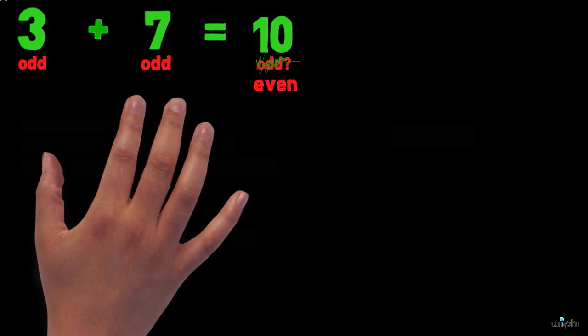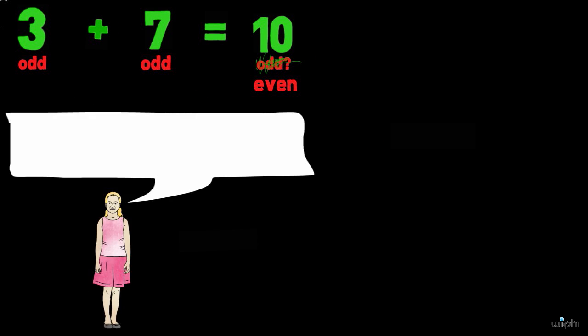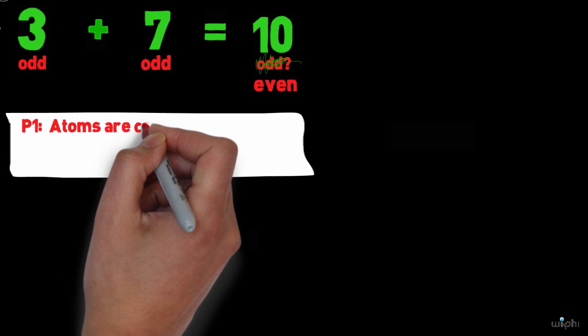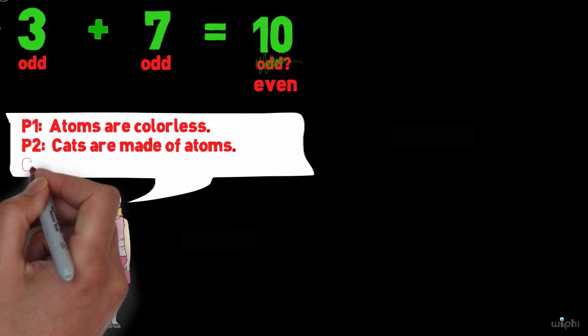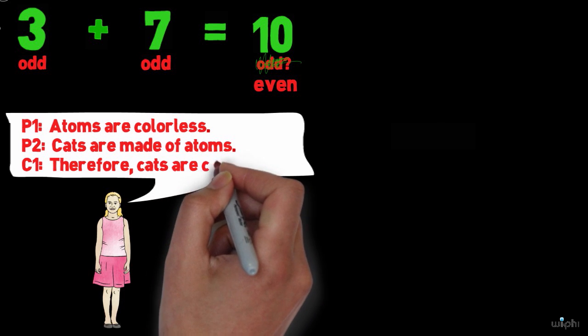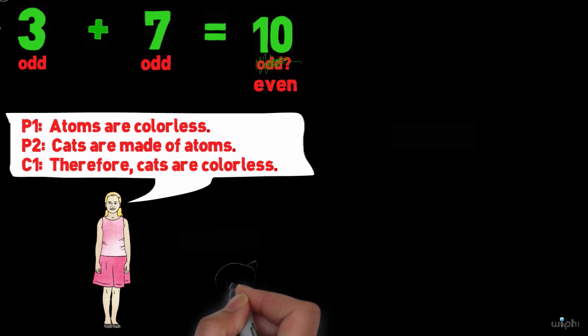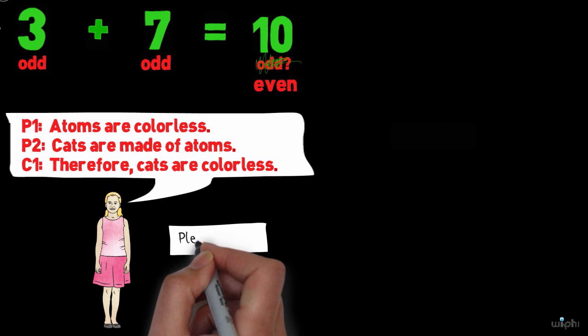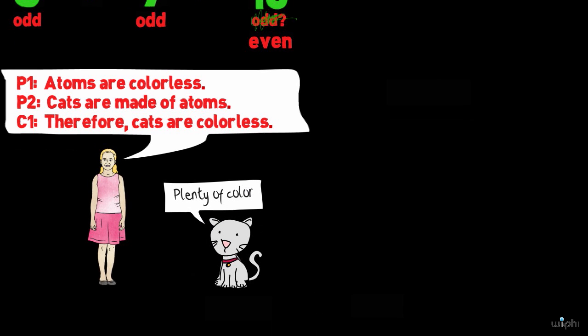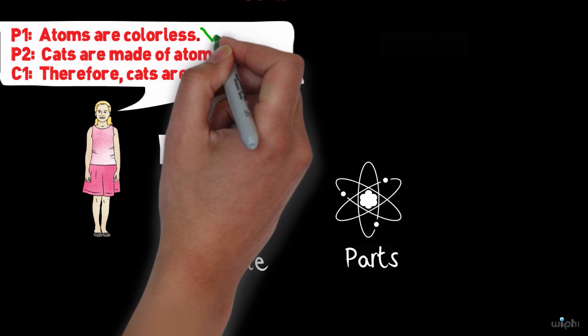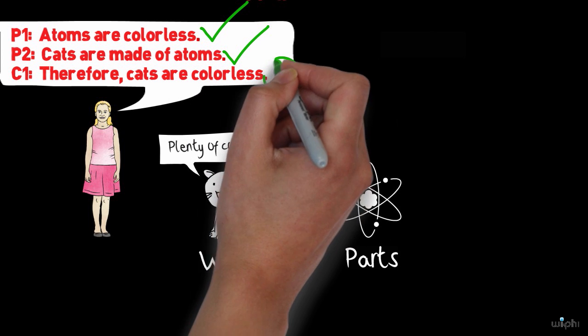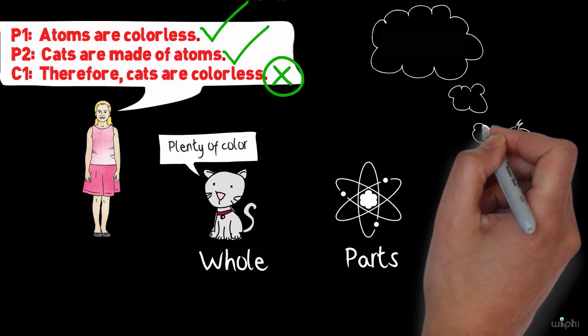Let's try another example. Suppose your friend made this argument. Premise 1: Atoms are colorless. Premise 2: Cats, we know, are composed of a bunch of atoms. Conclusion: Therefore, cats are colorless too. Well, we know that cats are not in fact colorless, but we can also see where this person made her error. Without justification, she assumed that the whole has the same qualities as its parts. So even though the premises of her argument are true, she committed the fallacy of composition. So we don't have to worry about any colorless cats.